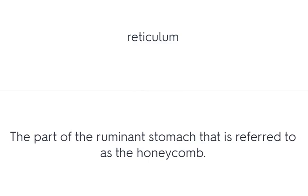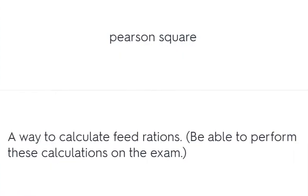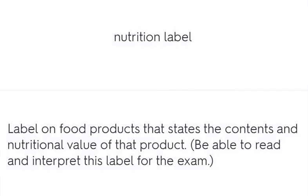Reticulum – the part of the ruminant stomach that is referred to as the honeycomb. Pearson Square – a way to calculate feed rations. Nutrition Label – a label on food products that states the nutritional content.